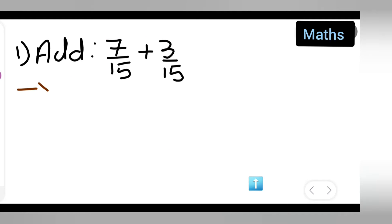First, take down the question: add 7/15 plus 3/15. I'm going to give you all in step-wise order. Write down 7/15 plus 3/15.